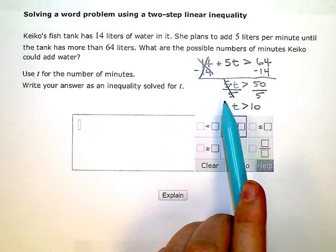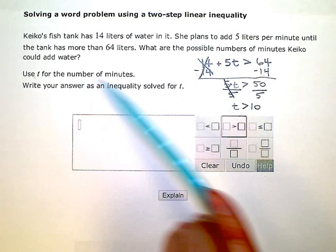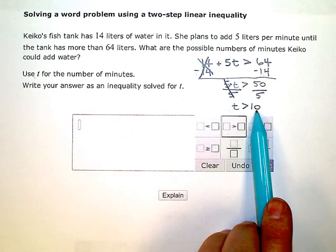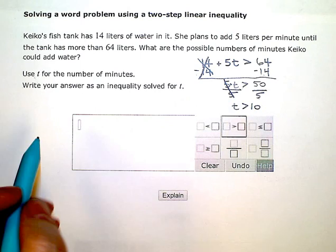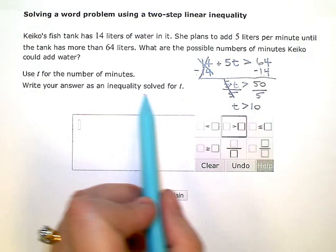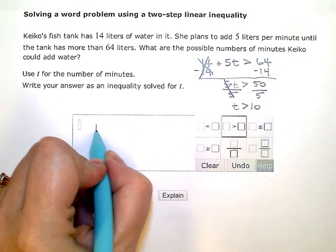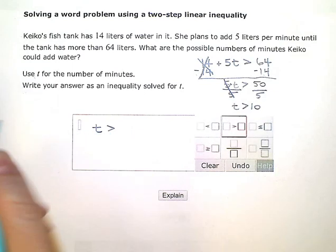But that leaves me with T is greater than or equal to 50 divided by 5 is 10. So my time or my number of minutes has to be greater than 10. So for my answer, as an inequality solved for T, I would put T is greater than 10.